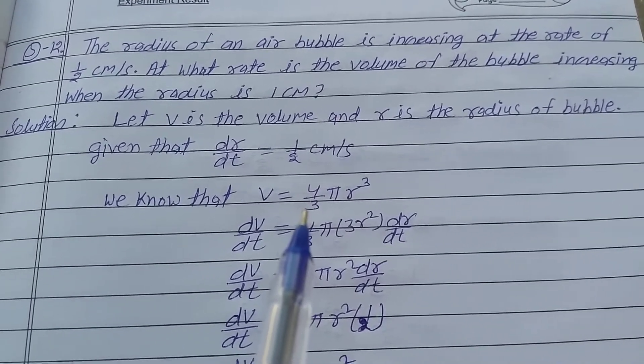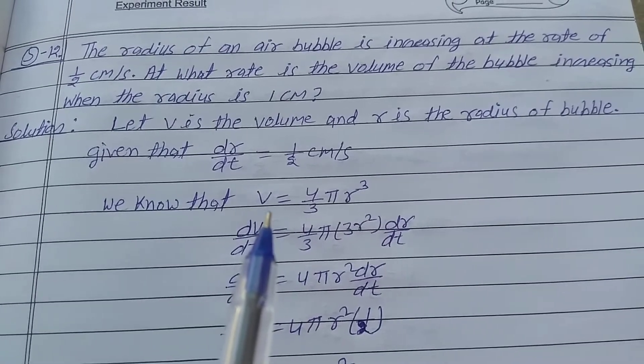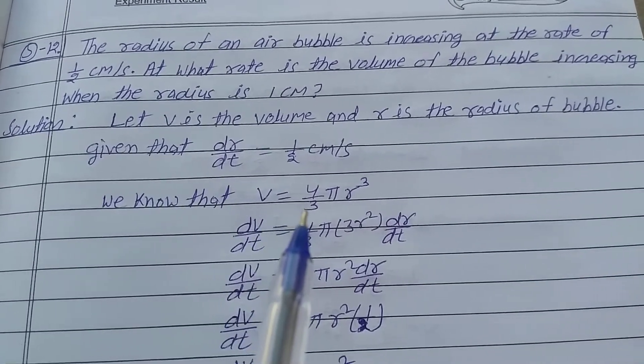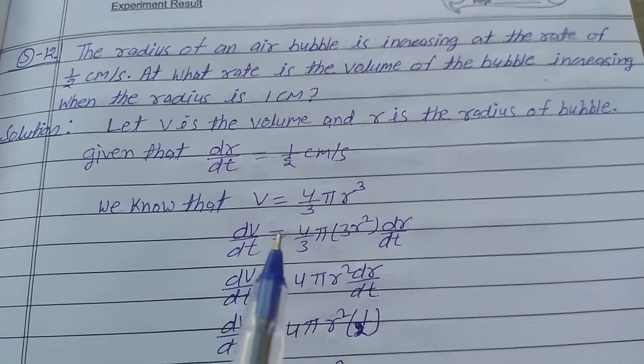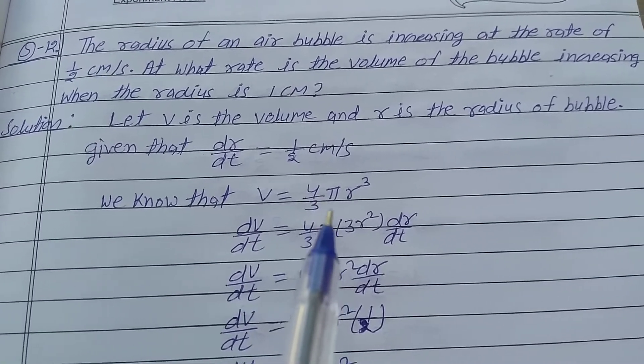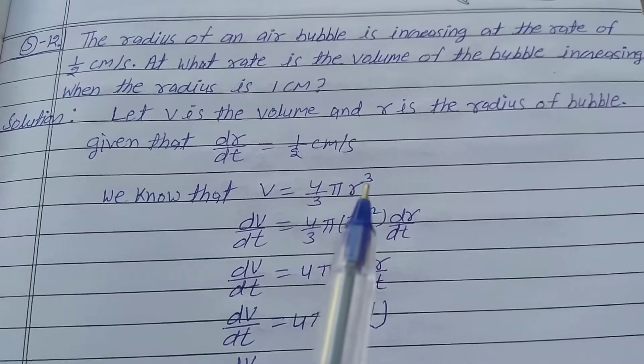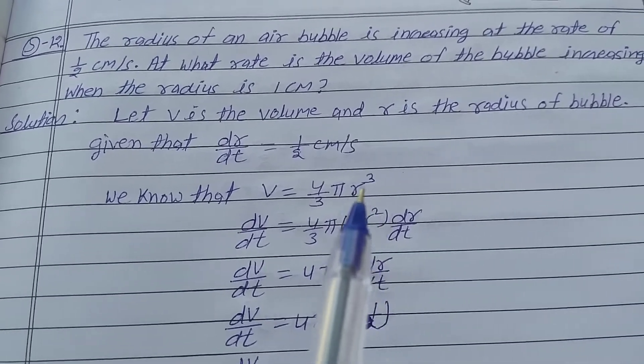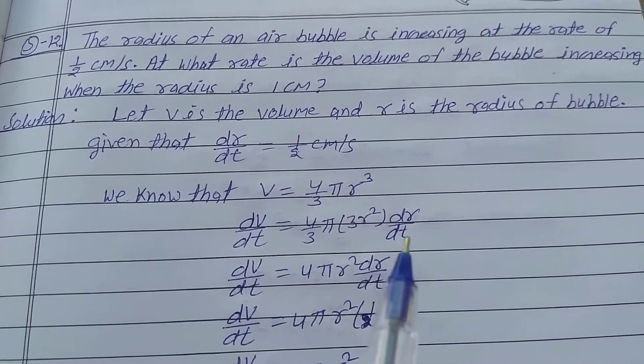To find dV/dt, differentiate both sides with respect to t. dV/dt = (4/3)π × 3r² × dr/dt.